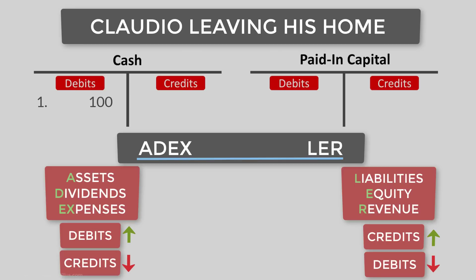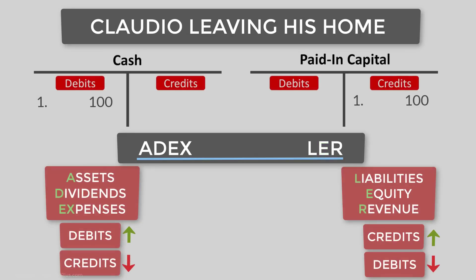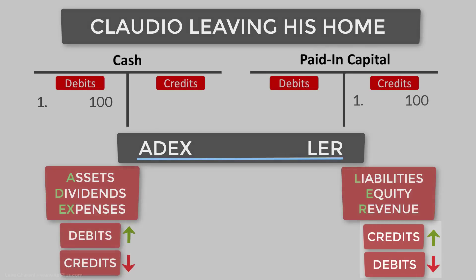With that in mind, we can easily determine that the second account — paid-in capital — will be credited for 100 euros. To be on the safe side, we use ADEXLER again. Paid-in capital is an equity account, represented by the E in LER. LER is the shortcut to remember credits; these accounts increase with credits and decrease with debits. Since equity is increasing, it needs a credit for 100. Both sides of the transaction are in balance — we recorded our first transaction.